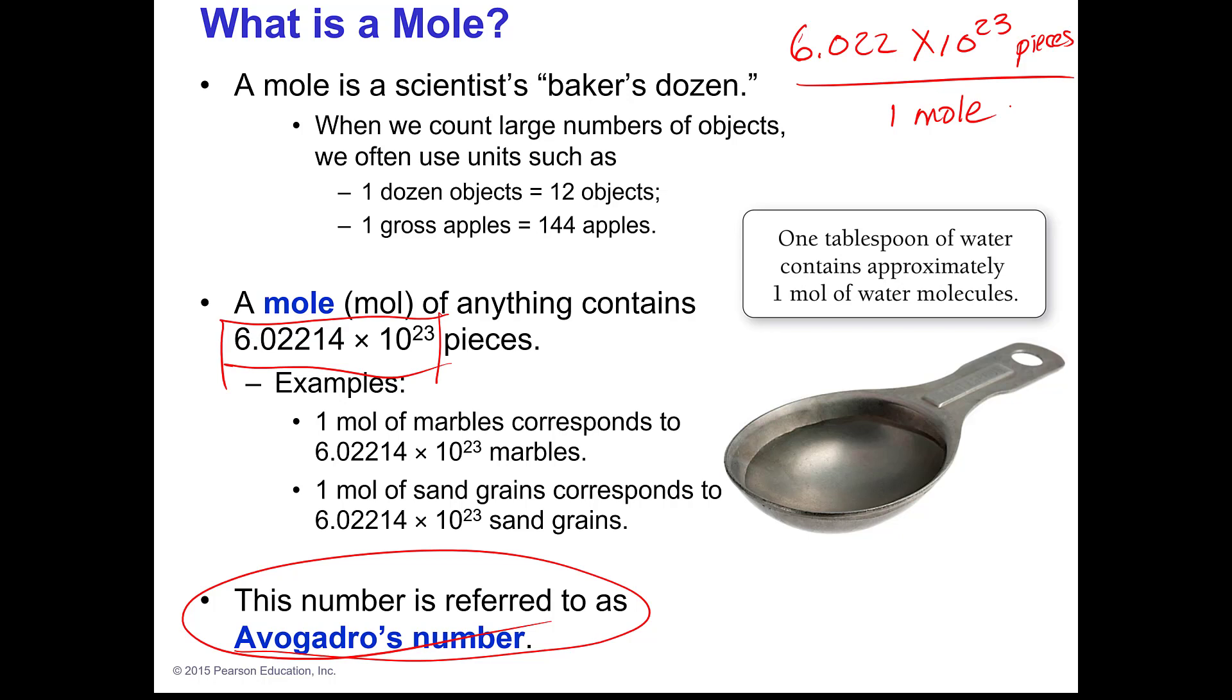A tablespoon of water contains about a mole of water molecules. So in this spoon there are 6.022 times 10 to the 23rd water molecules. That is a really hard number to visualize because it is so huge. 10 to the 3rd is a thousand, so 10 to the 23rd doesn't even have a name. But it takes that many to have a mole of something.